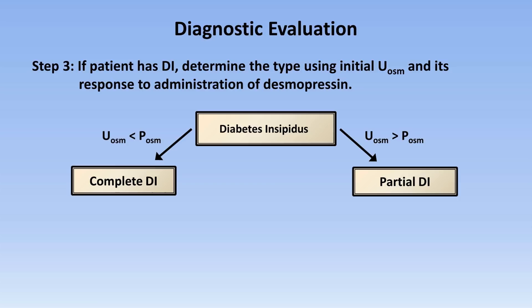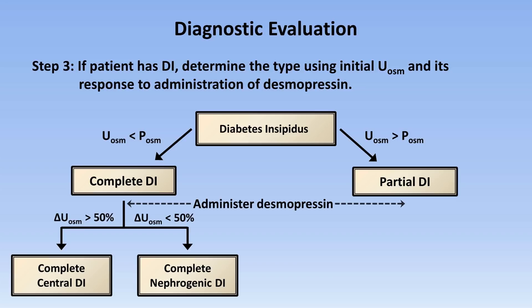At this point, we must determine whether the DI is central or nephrogenic by administering exogenous desmopressin. In patients with complete central DI — no endogenous ADH but presumably functioning kidneys — desmopressin would be expected to have a dramatic effect on urine osmolality. Whereas patients with complete nephrogenic DI have complete resistance to ADH, so you might expect no change in urine osmolality in response to desmopressin. The only unexpected part is that in complete nephrogenic DI, occasionally urine osmolality will be increased, though to a relatively small degree — why there's any effect at all is not easy to definitively explain.